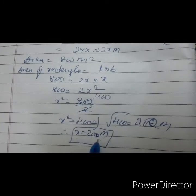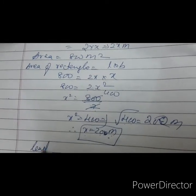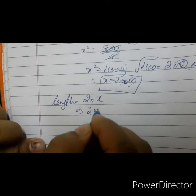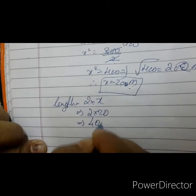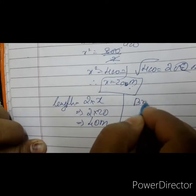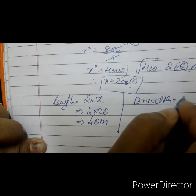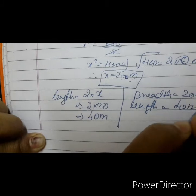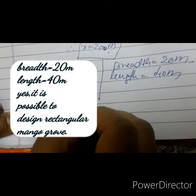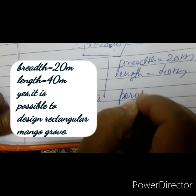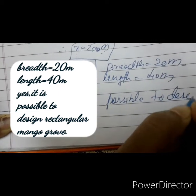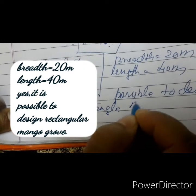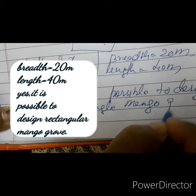x is breadth, so breadth equals 20 metre. Length is twice: 2 into x equals 2 into 20 equals 40 metre. Length equals 40 metre and breadth equals 20 metre. Therefore, it is possible to design a rectangle mango grove.